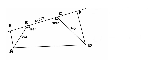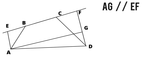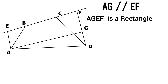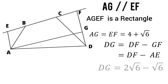On line segment DF, we mark a point G such that AG is parallel to EF, making AGEF a rectangle. In a rectangle, opposite sides are equal, so AG equals EF equals 4 plus root 6 cm. Then DG equals DF minus GF. Since GF is the opposite side of AE, GF equals AE equals root 6. Therefore DG equals 2 root 6 minus root 6, so DG equals root 6.